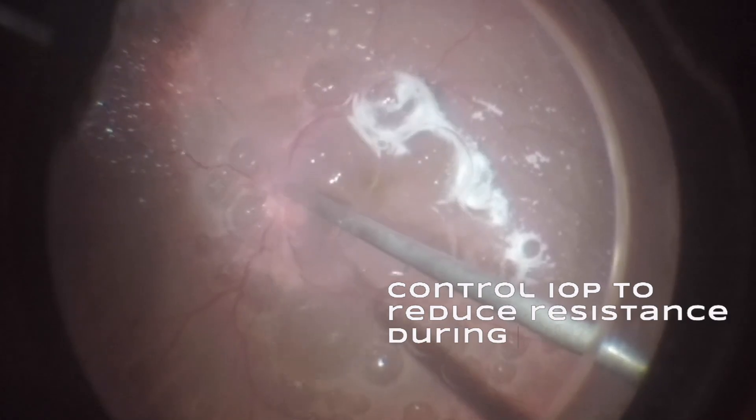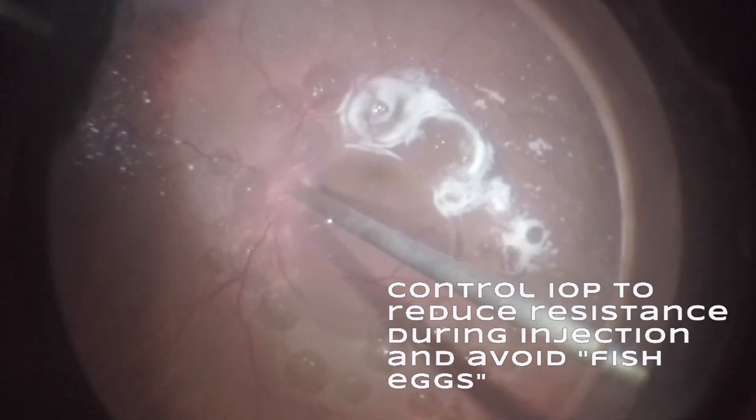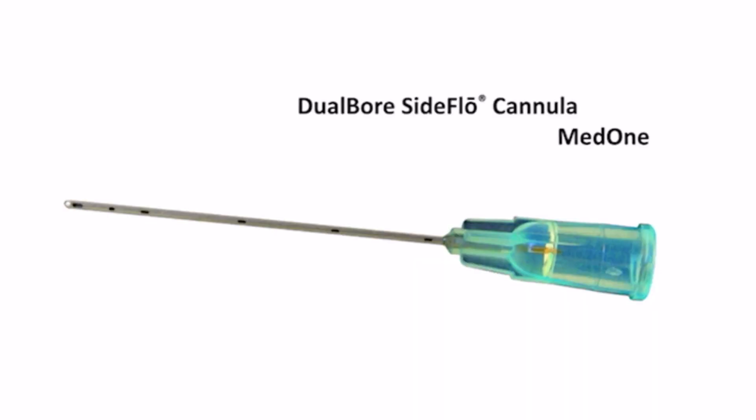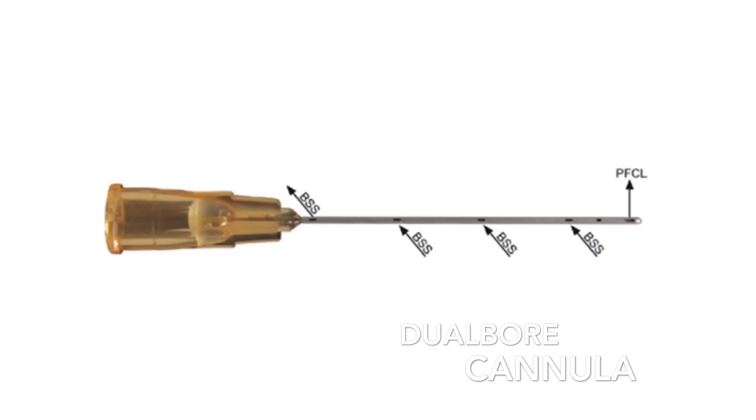Controlling intraocular pressure is crucial to reduce resistance during injection, and minimizing the formation of fish eggs can be achieved in various ways. To achieve low injection pressure and maintain stable IOP, dual-bore cannulas are highly effective.